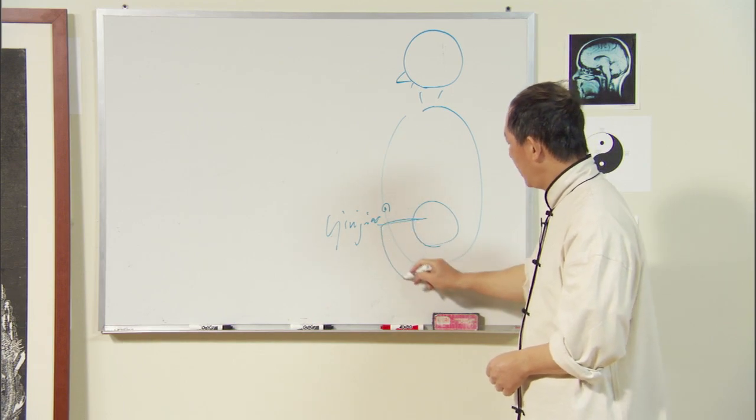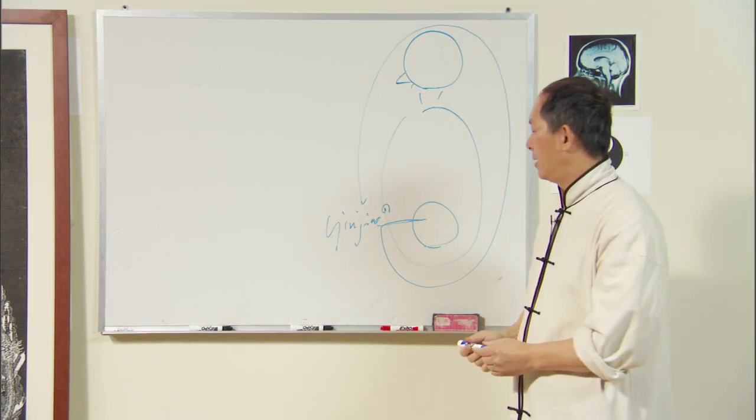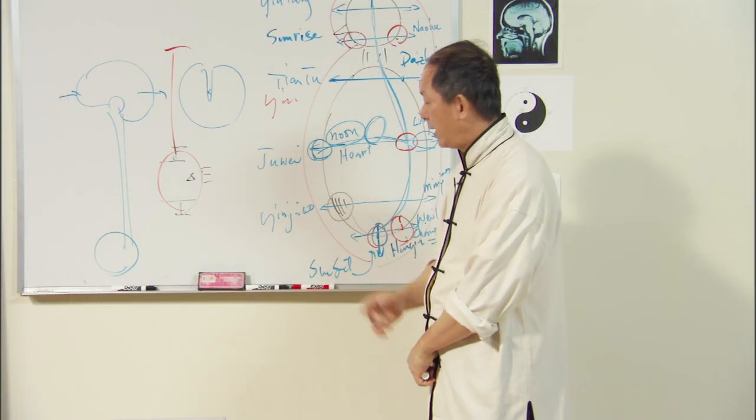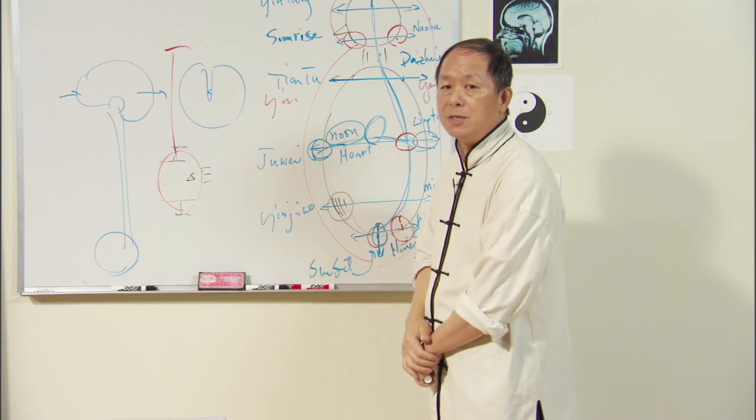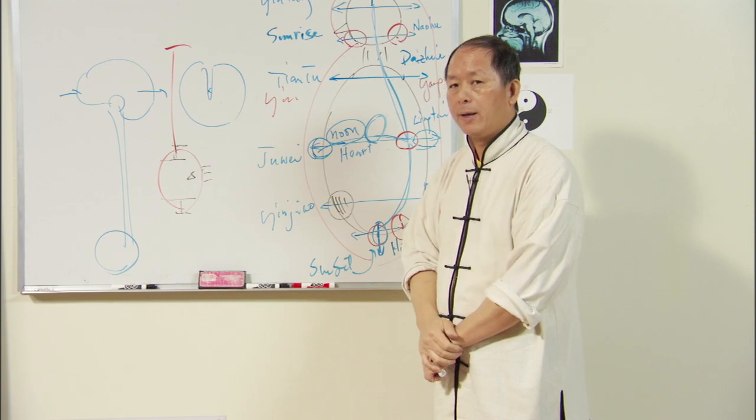Small circulation meditation is also known as the microcosmic orbit in the Buddhist tradition and yoga. Using this technique, one may develop the main energetic circulation pathway of the body, which in turn provides abundant energy to the circulatory system branching out to the entire body.